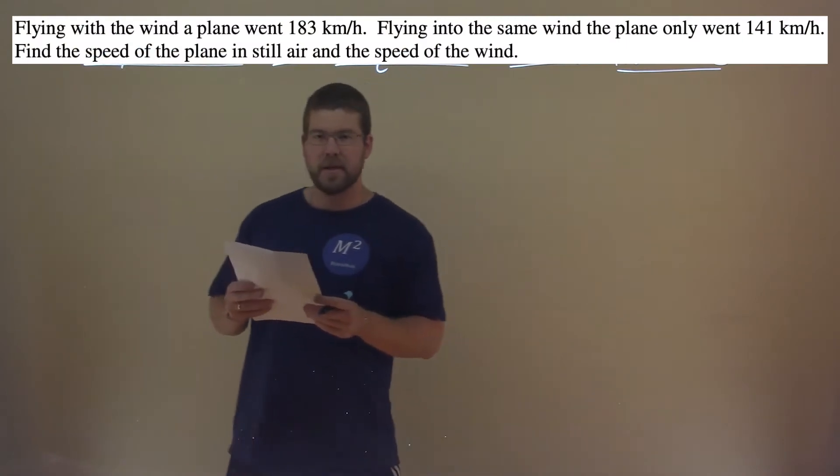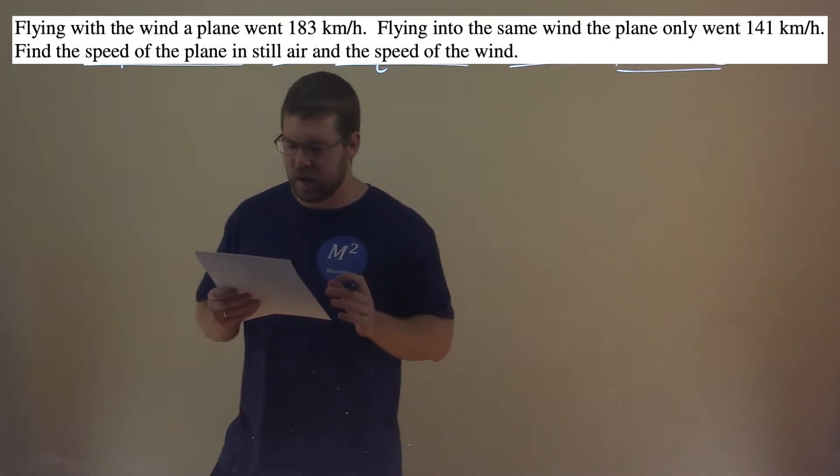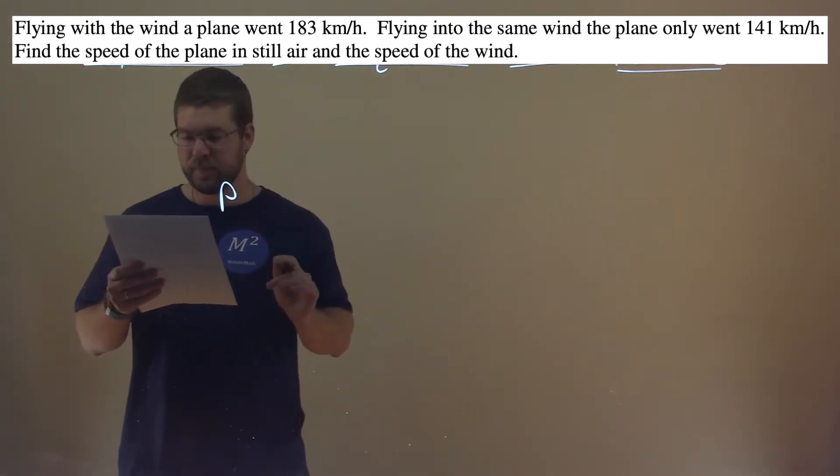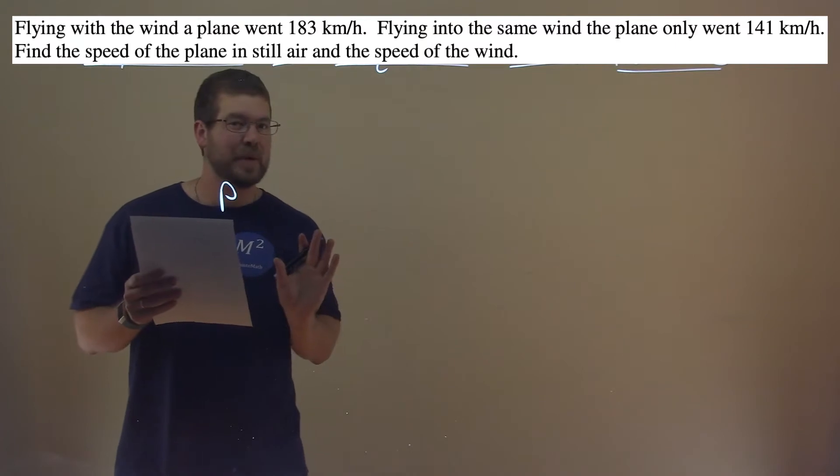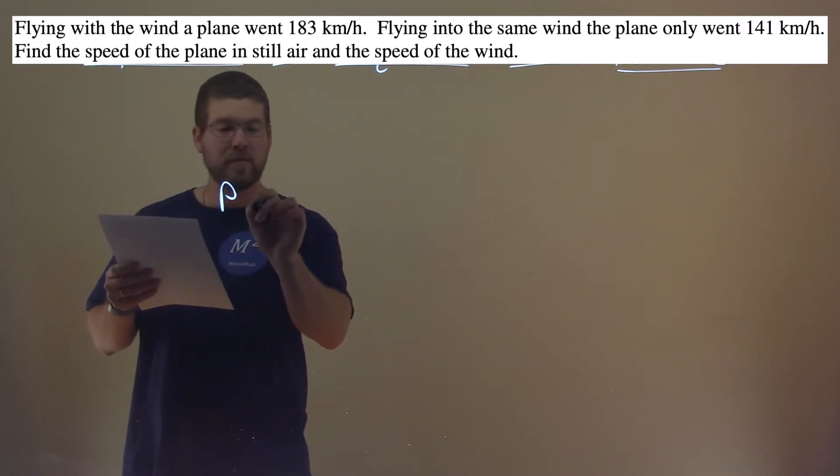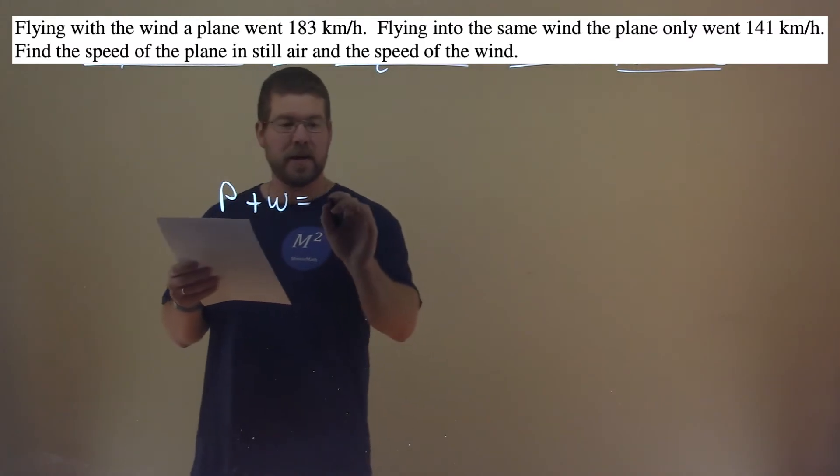So this one's actually fairly easy to set up if we know what we're doing. We take the speed of the plane, and when it's going with the wind, the wind's helping it go. So the average speed of the plane when it's no air is P. But if we add the wind speed, plus W, and the wind speed, we get 183.